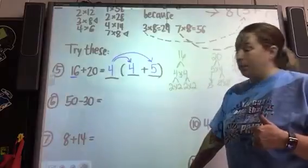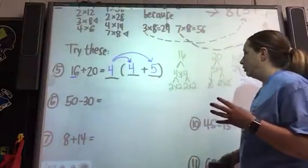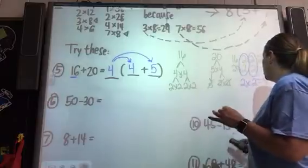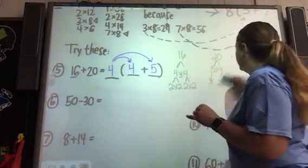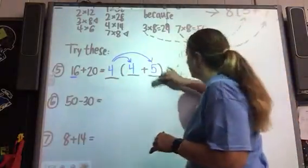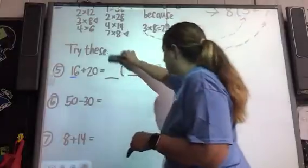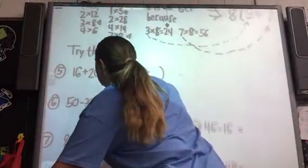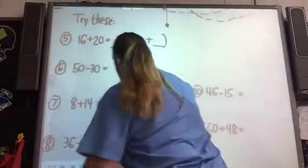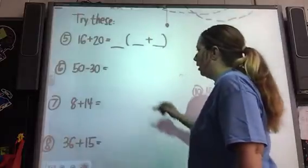If you need to pause, do it right now because I'm going to erase so we can move down and try the next one. The next one we have is 50 minus 30.